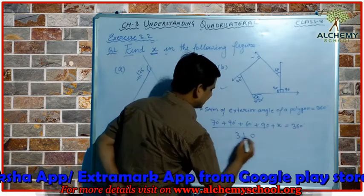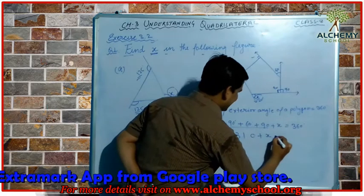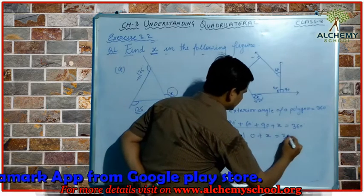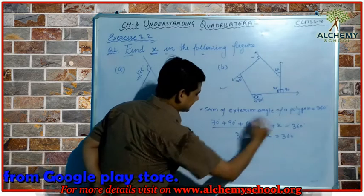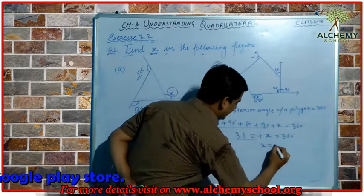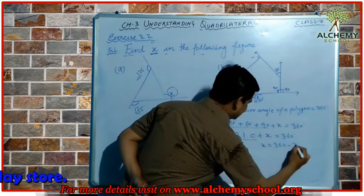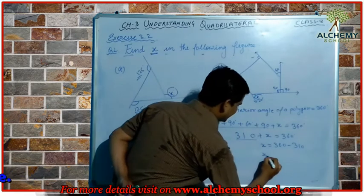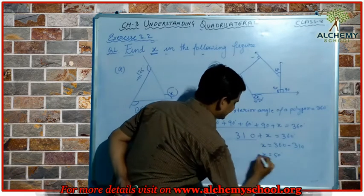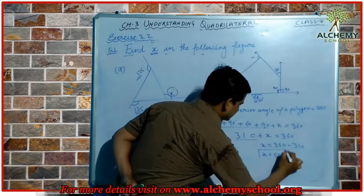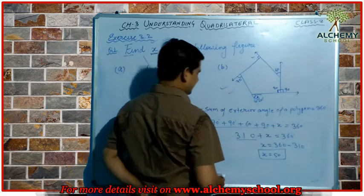Adding those angles gives 310. So 310 + x = 360°. Taking 310 to the other side, x = 360 − 310 = 50 degrees. The value of x for the second figure is 50 degrees.